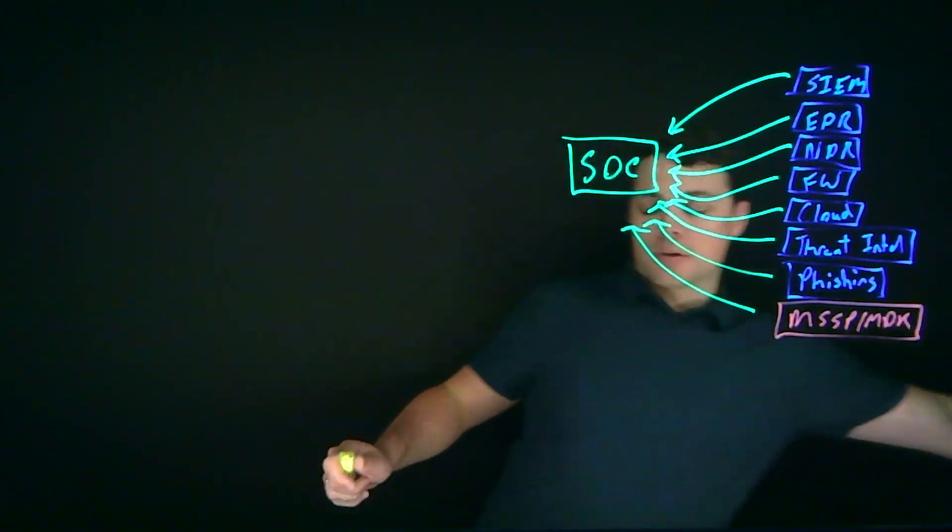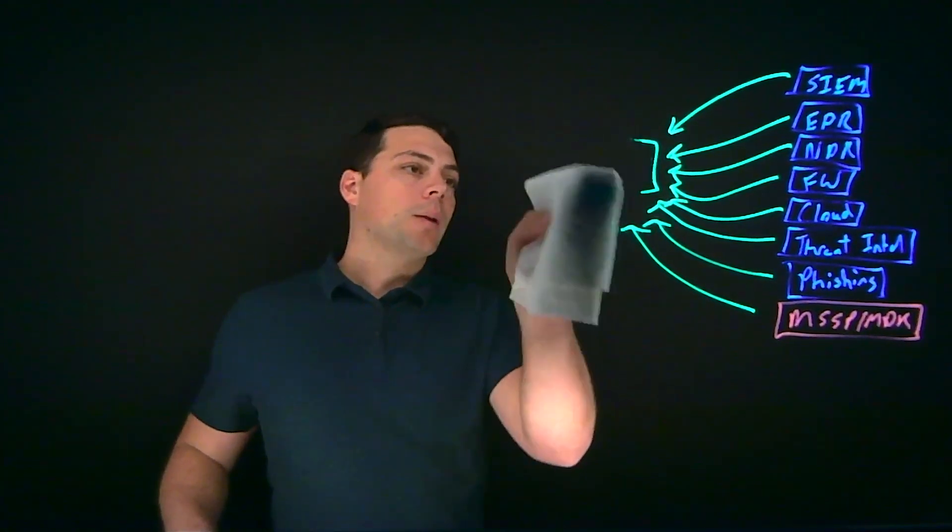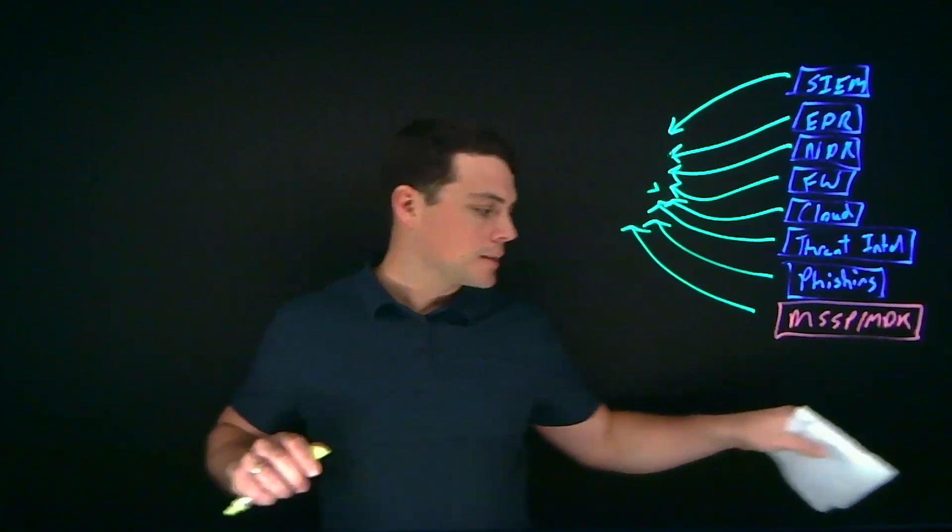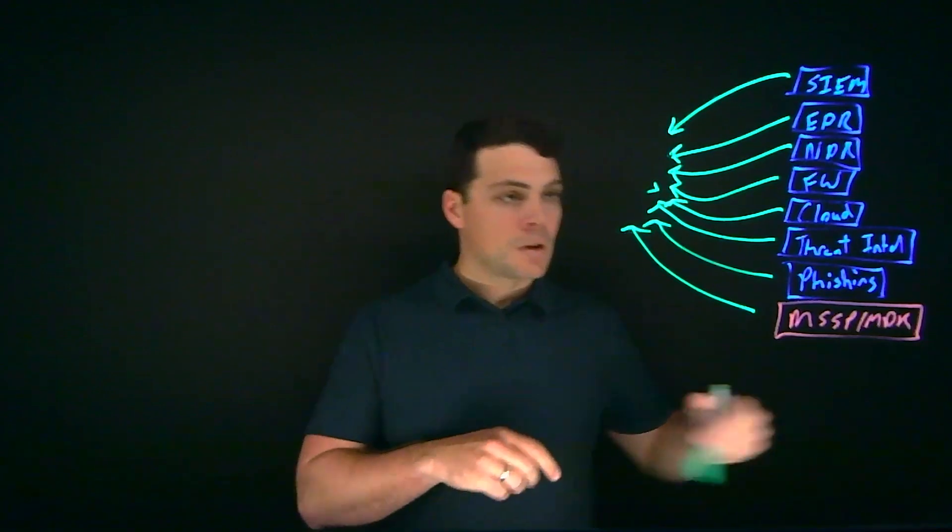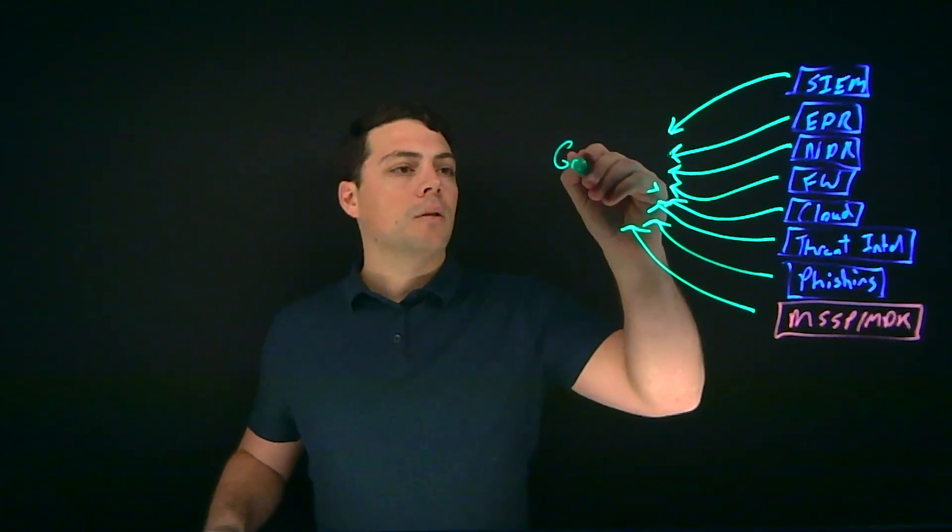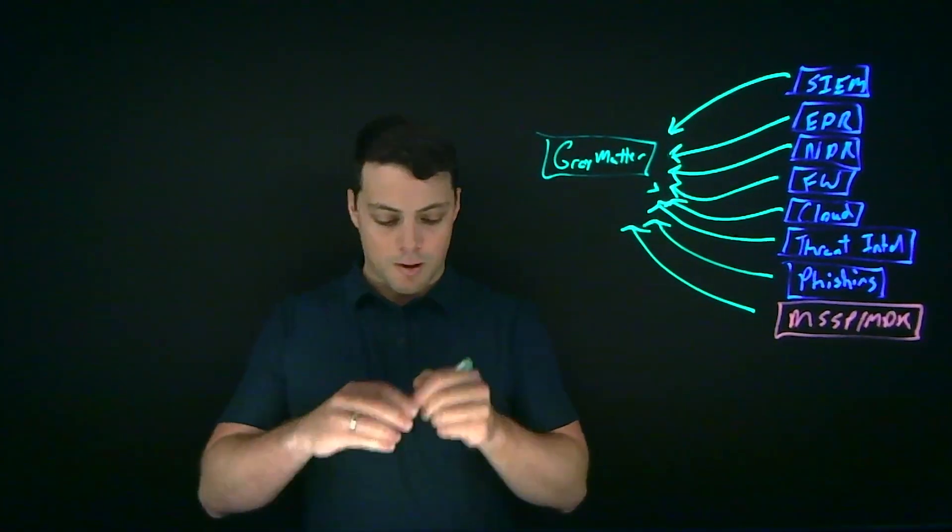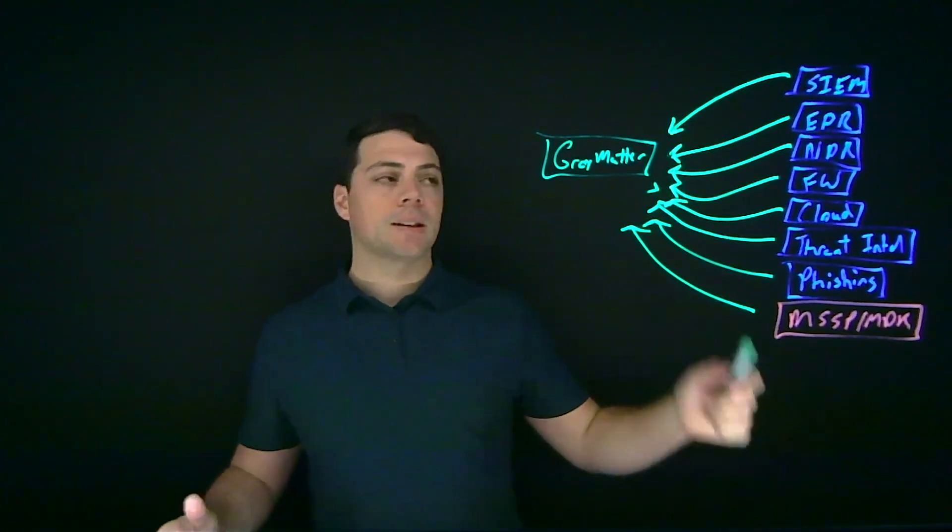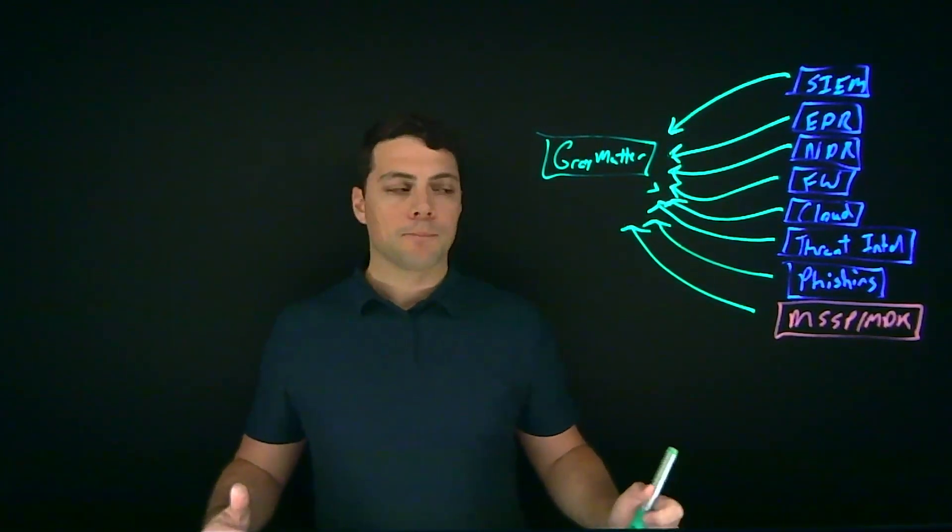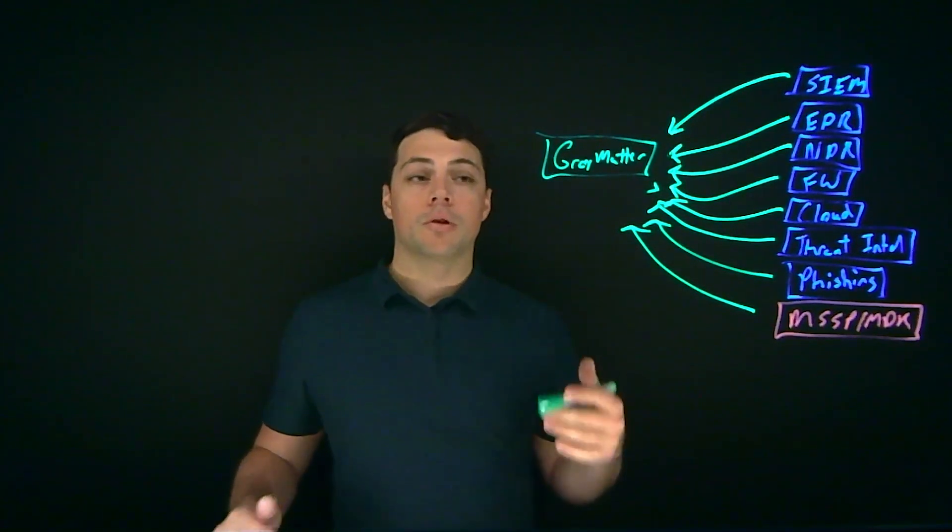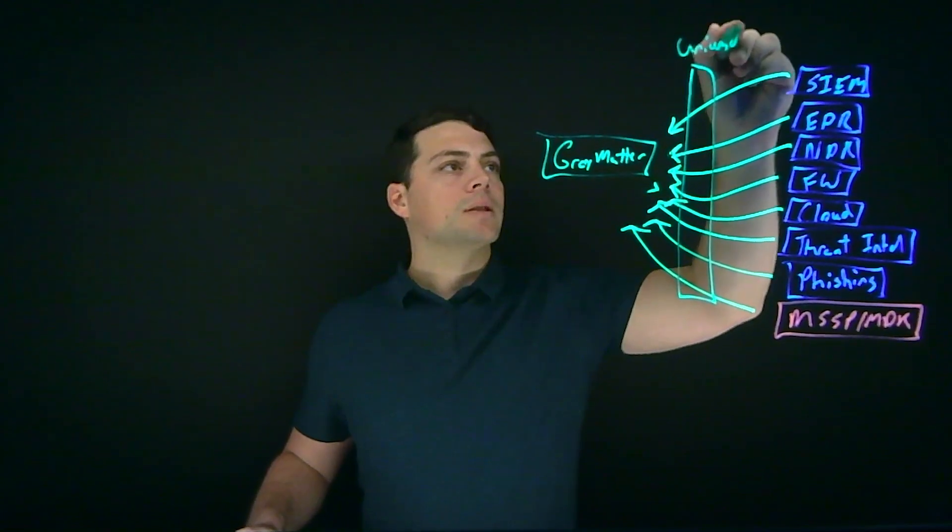So ReliQuest, over the last couple of years, has created a platform that helps. ReliQuest created our security operations platform that's built on an OpenXDR architecture called Gray Matter. So Gray Matter is built in AWS that I mentioned is an OpenXDR platform.